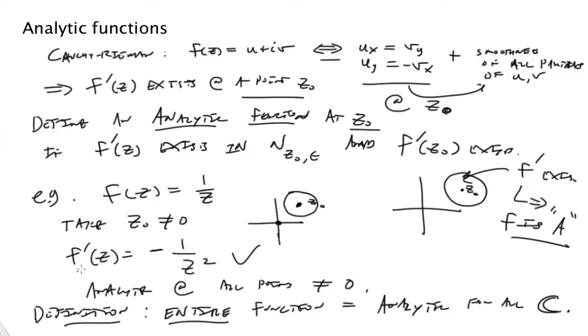So for instance, this function f of z is equal to one over z is not an entire function because there is one point, i.e. z equals zero right there, where the function is not analytic, it's not defined. And in which case we can't say that the function is entire.